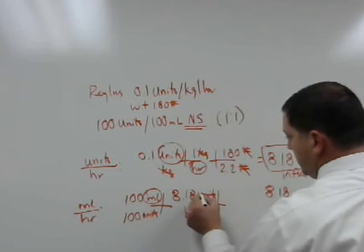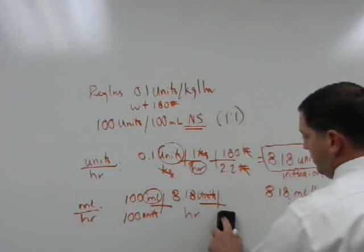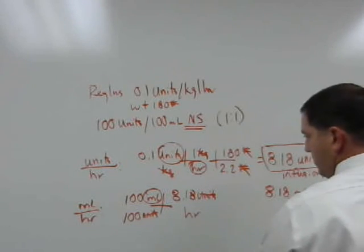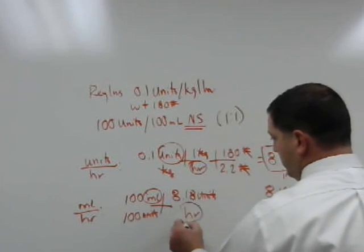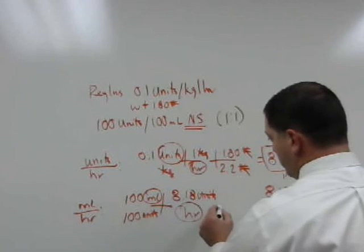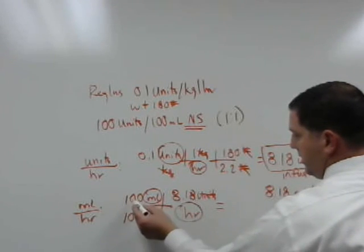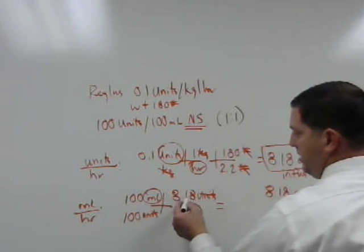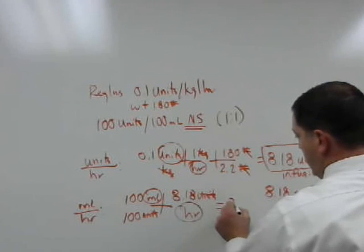I bring the hours from up here into my problem. I now take the 8.18 units per hour, cancel out my units. At this point, I don't even need this little train track here, because now I actually have only left what I'm looking for. I say 100 times 8.18 divided by 100, 8.18.